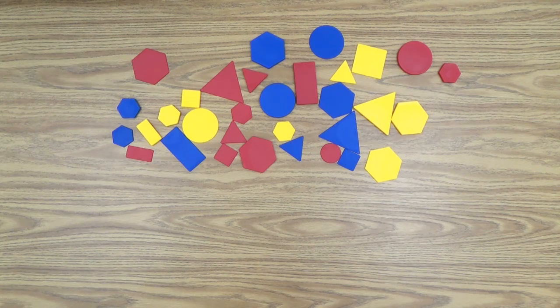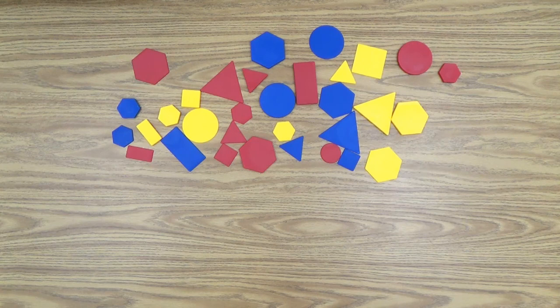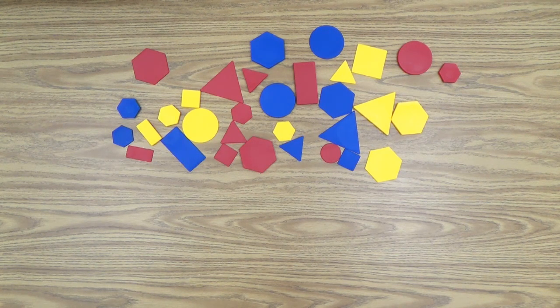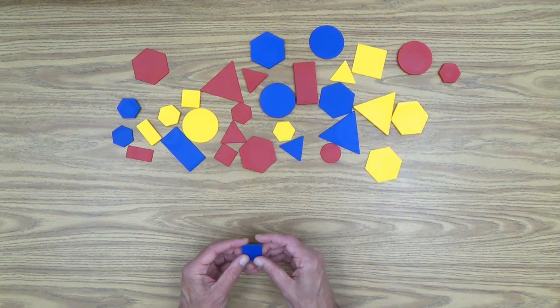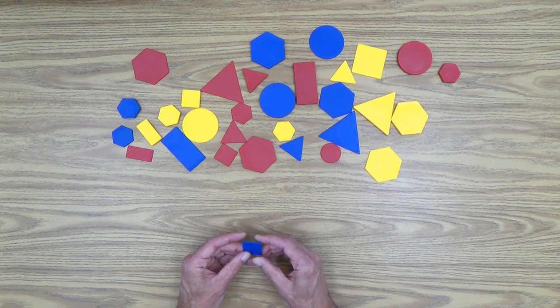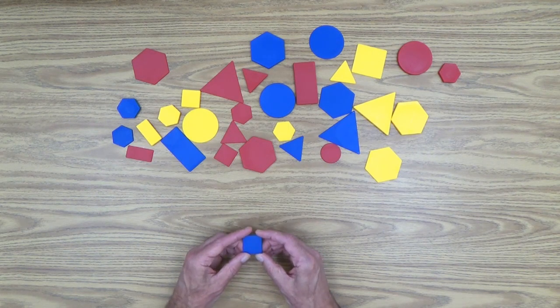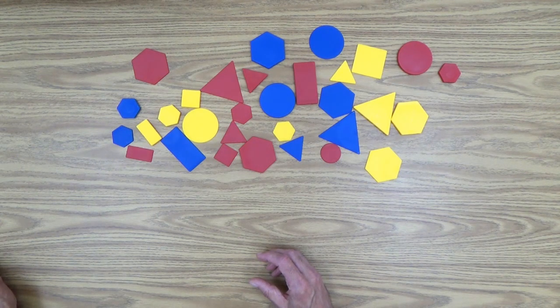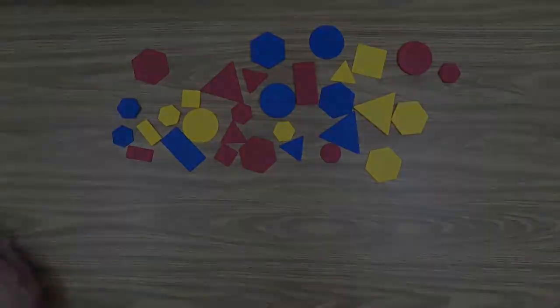And of course your child's going to have to look at all of those blocks in there and try to pick it out through a thinking process in their head. And of course here it is and if she finds it have her describe it just like you did. A small, blue, thin square. So that's the game called I spy or I see depending on what you want to call it.